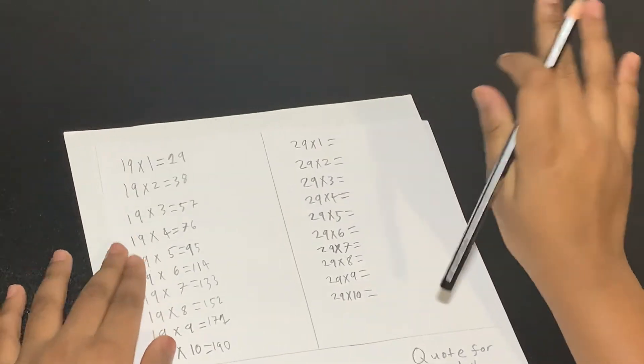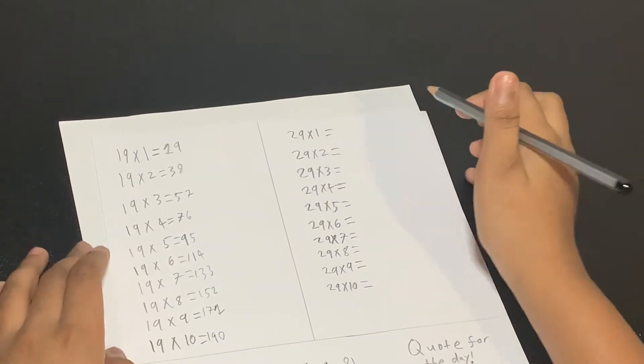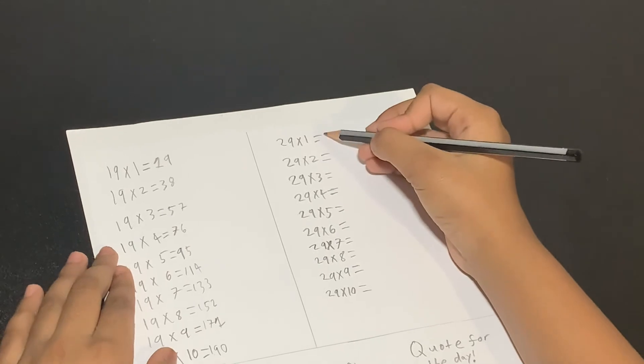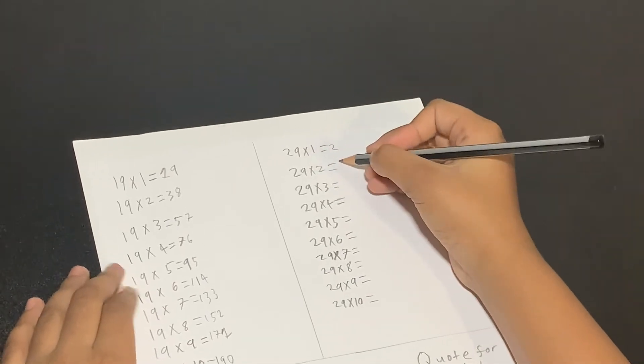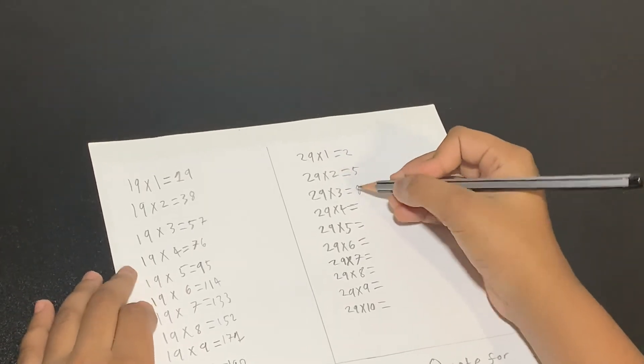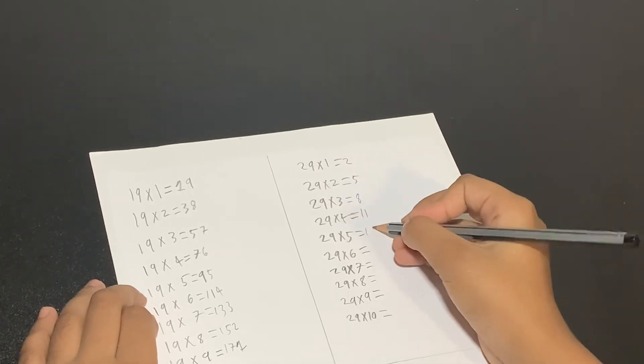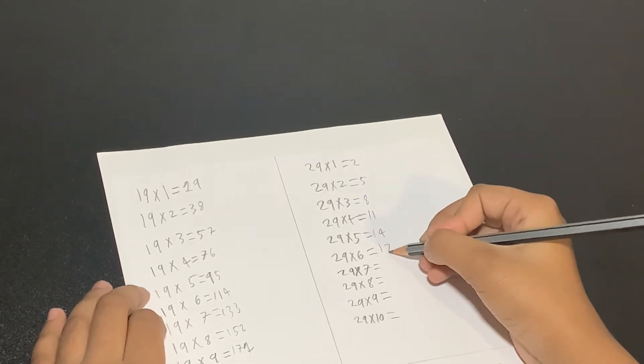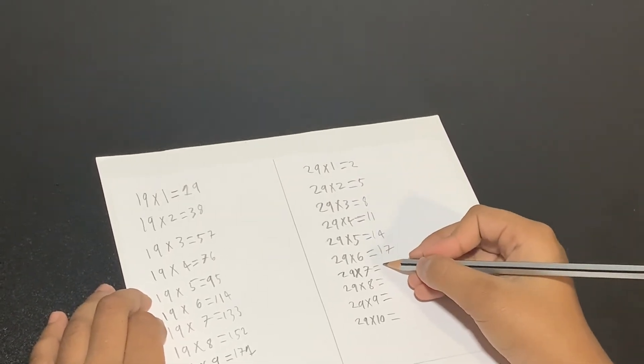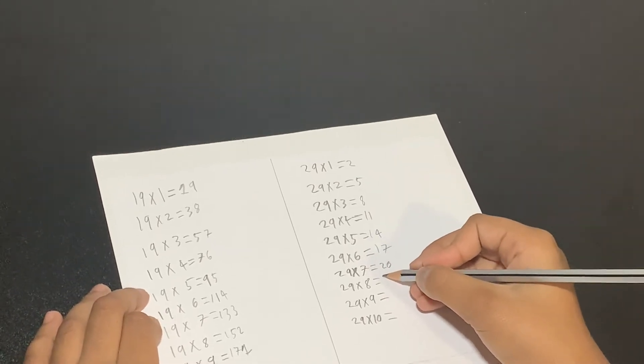Next we have our 29 tables. So we start on our 2, then we add 3 to 5, add 3 to 8, add 3 to 11, add 3 to 14, add 3 to 17, add 3 to 20, add 3 to 23, add 3 to 26, add 3 to 29.